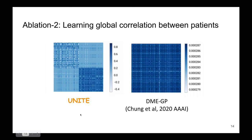Moreover, we also show that UNITE is able to learn a global correlation between patients. Here is a toy example comparing our model UNITE with the state-of-the-art deep probabilistic model DME-GP, proposed at AAAI 2022. We show that UNITE learns meaningful global correlation and can cluster patients based on global similarities.